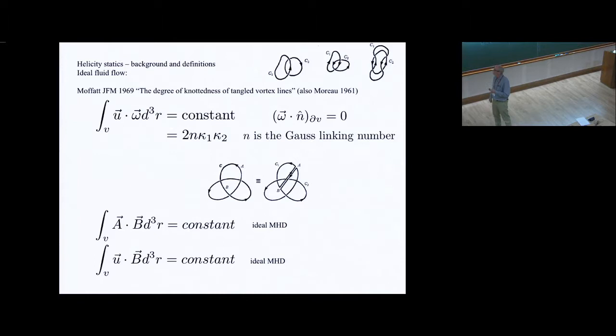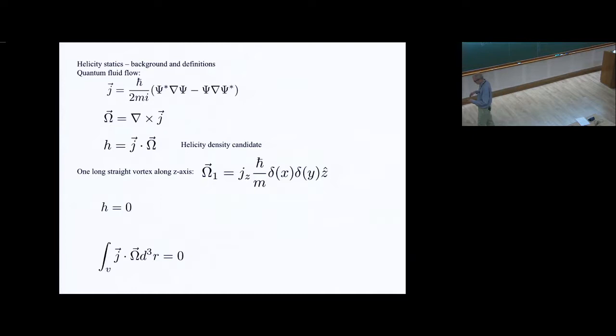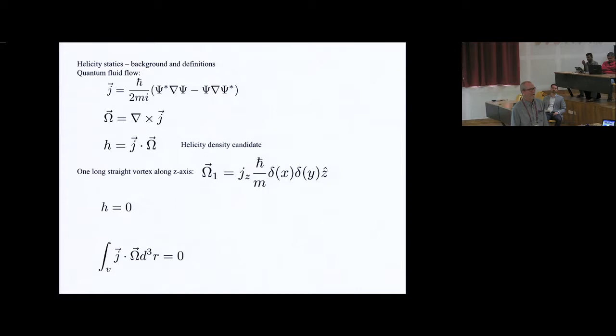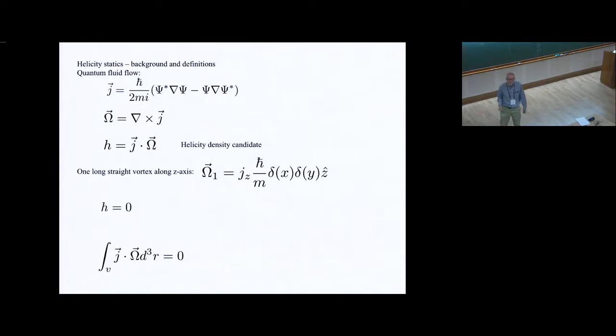In thinking about the quantum fluid case, we have this quantum mechanical flux, h-bar over 2mi, psi star grad psi minus psi grad psi star. Psi then is an order parameter, which is a complex field for the quantum fluid. If we think about rotation, capital omega is the curl of the momentum flux. We might think of a candidate being the momentum flux into this curl of the momentum flux.